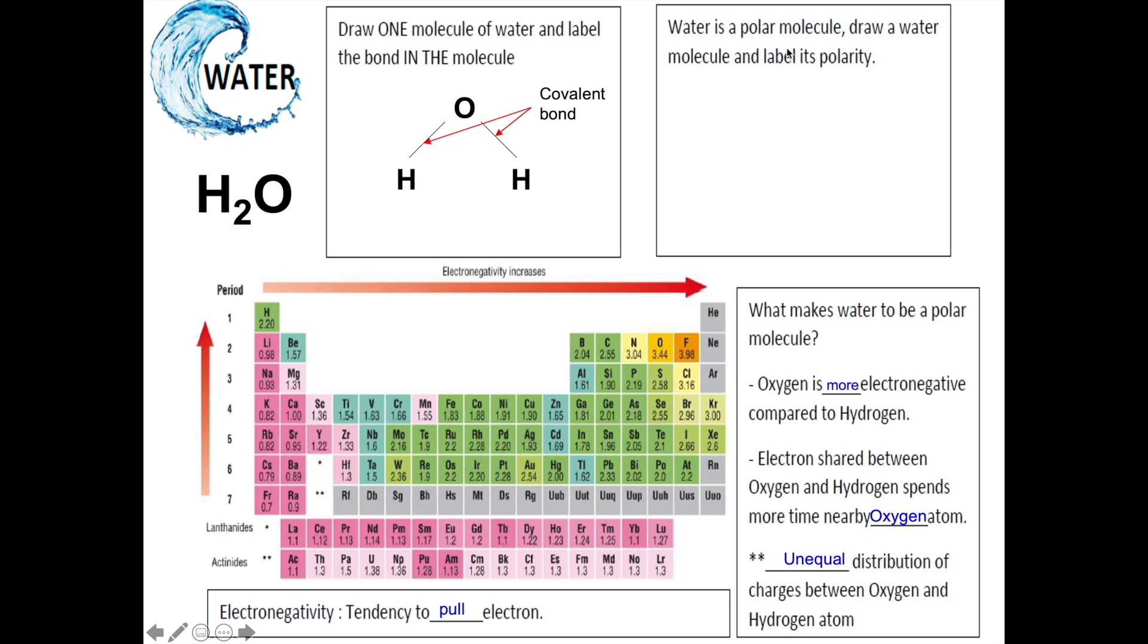To answer the question within this box, we first have to draw normal water molecules, like this. Now, let's label its polarity. Oxygen will pull electrons from two places, from this bond and from this bond. Since electrons are negatively charged, this oxygen will now gain two delta-negative poles.